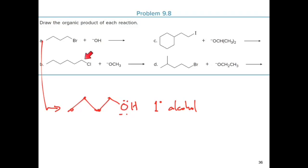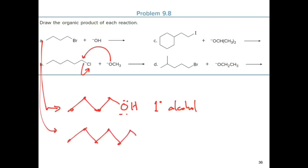For the second reaction, we have a primary alkyl halide reacting with methoxide ion. The methoxide, a strong nucleophile, attacks the primary carbon and results in cleavage of the sigma bond between carbon and chlorine. The product is an unsymmetrical ether with six carbon atoms and an OCH₃ group.